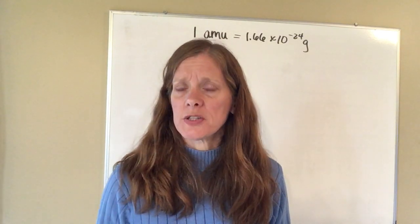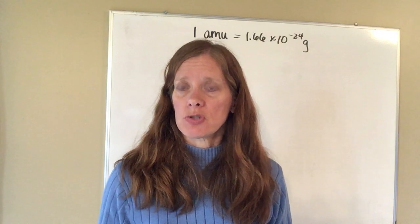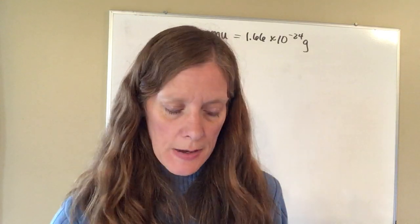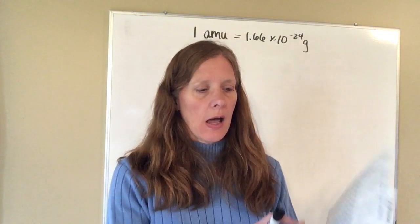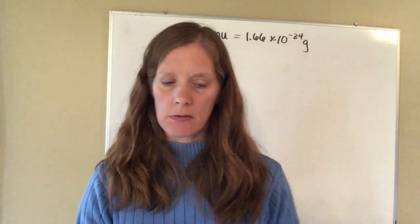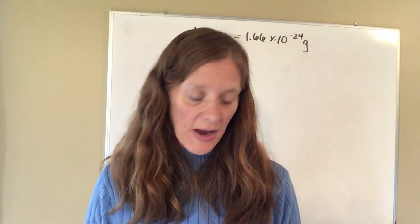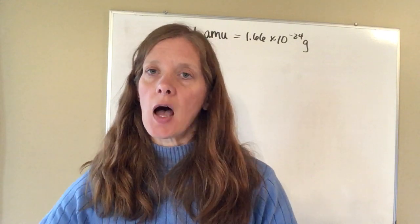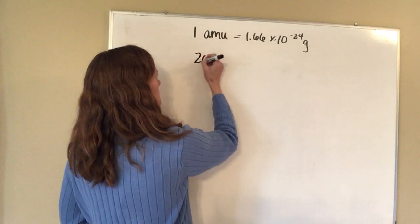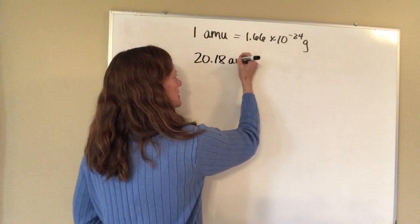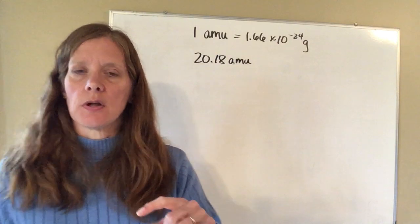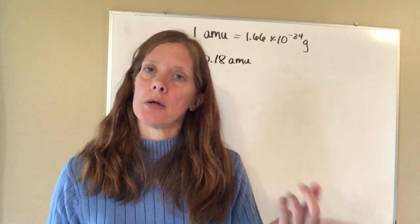One thing I want to be sure you know how to do is use your scientific calculator, because you're definitely going to need that not only in this chapter but in many chapters to come. If you look at neon — its symbol is Ne and it's the second one down in the right-hand column of the periodic table — you will find that the atomic mass of that element is 20.18 AMUs. An AMU is an atomic mass unit, and it's approximately the mass of either a proton or a neutron.